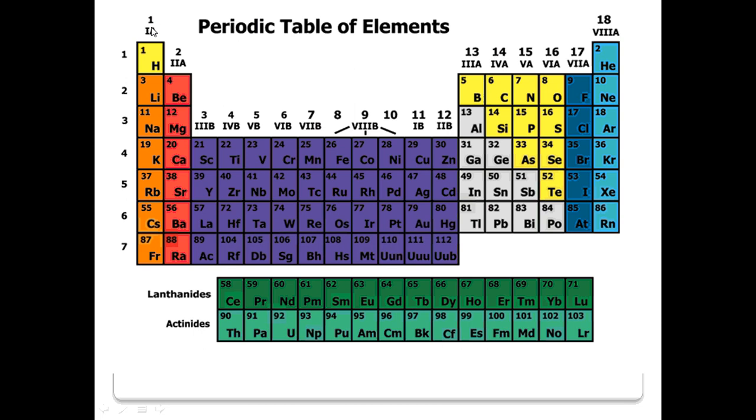They're arranged in families or groups, which are vertical columns, and periods, which are horizontal rows.